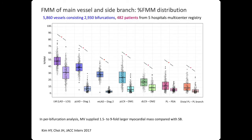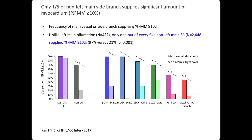We investigated the amount of myocardial mass subtended by main vessels and side branches from almost 3,000 bifurcations. As shown in this figure, in per-bifurcation analysis, the major vessel supplies 1.5 to 9-fold greater myocardial mass compared with side branches. Therefore, except for the left main, only one out of every five non-left-main bifurcations has a side branch that supplies a significant amount of myocardium — defined as fractional myocardial mass of more than 10%.